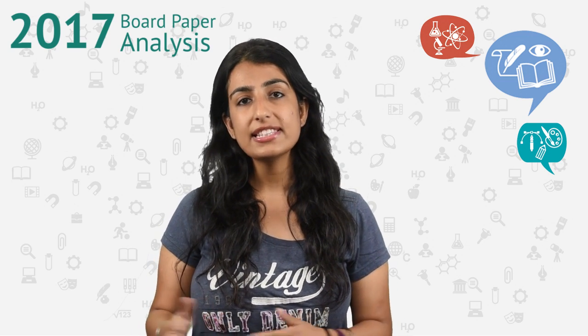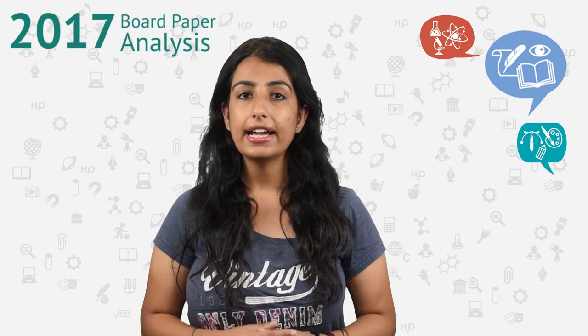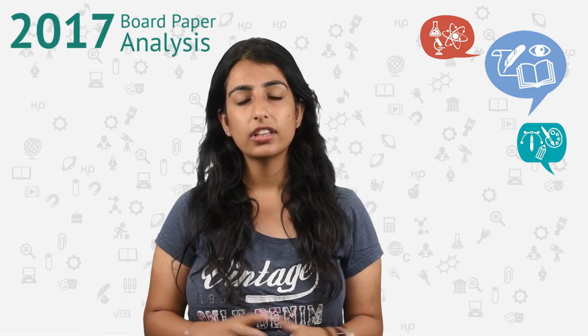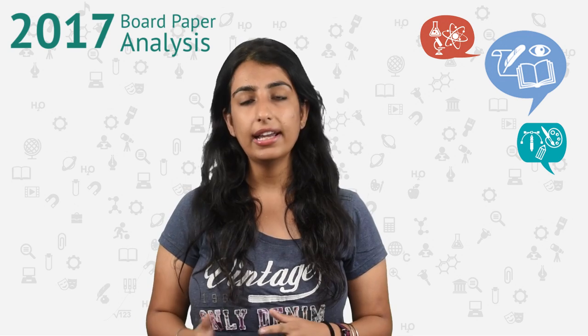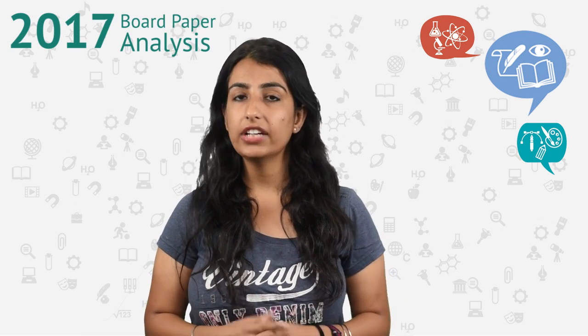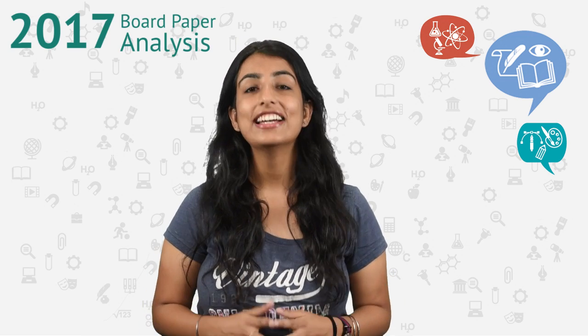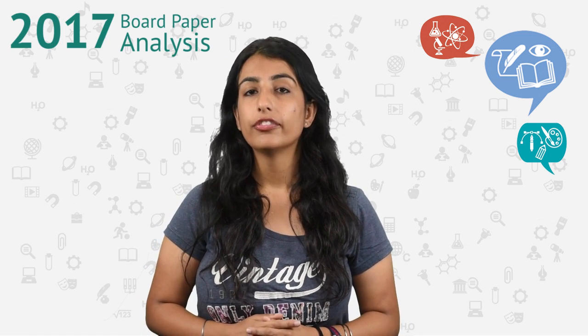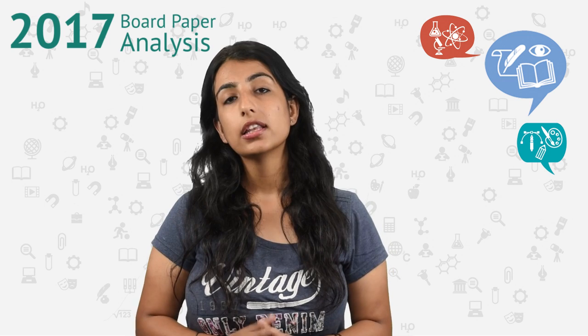The grammar section was different in the three sets but the questions were very regular and could be done in just 15 minutes. In the literature section, the first RTC was from the poem 'For Anne Gregory'.